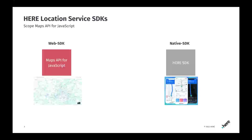How is Maps API for JavaScript positioned in the overall HERE ecosystem? Maps API for JavaScript belongs to the HERE Location Services, and more specifically to the HERE Location Services SDK. We differentiate between two SDKs: the Native SDK on the right-hand side, offering software development capabilities to develop applications on a cell phone, tablet, or in-dash navigation system; and on the other side, the Web SDK represented by Maps API for JavaScript, which runs in the browser environment — not just on desktop but also on mobile devices like tablets.